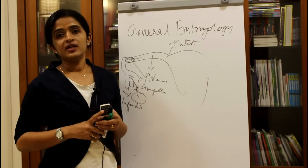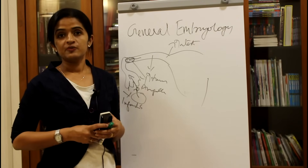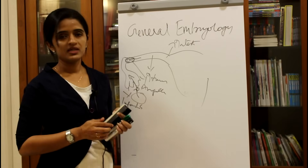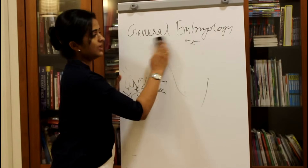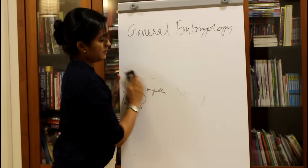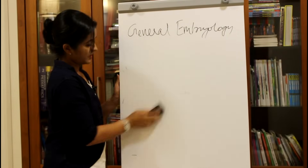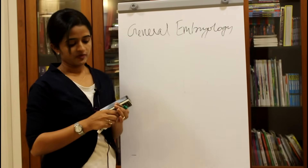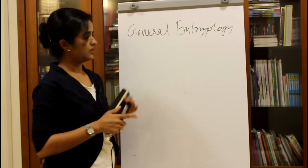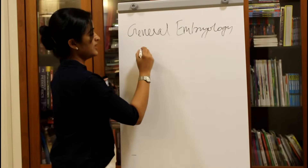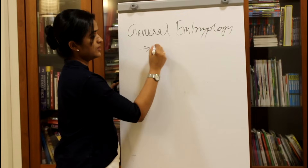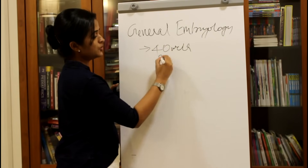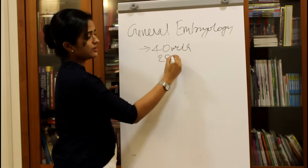When we talk about the duration of pregnancy in a human being, the entire length of human pregnancy is 40 weeks or 280 days.